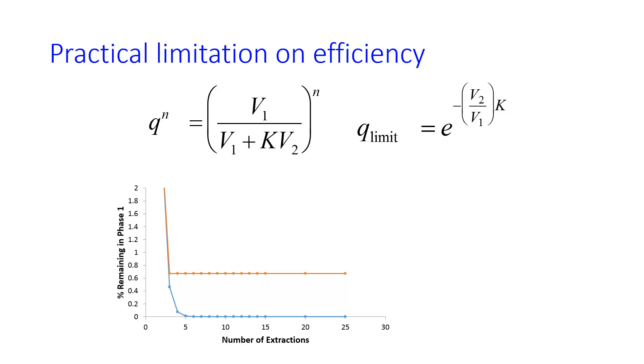Now, sometimes you don't want 75% remaining in phase 1, you want that to be lower. And so you can lower Q limit by either increasing K, by changing solvents, or by changing the pH, or something like that. You can increase V2, or you can decrease V1 relative to V2. In either case, these will make the negative exponent larger, making Q limit smaller.